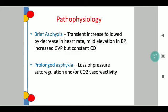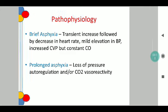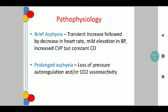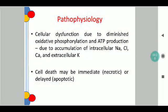Looking at the pathophysiology, we classify it into brief asphyxia and prolonged asphyxia. Brief asphyxia is characterized by a transient increase followed by a subsequent decrease in the heart rate, associated with a mild elevation in blood pressure and increased central venous pressure, but constant cardiac output is maintained. Prolonged asphyxia is because of a loss of pressure autoregulation, which may be associated with carbon dioxide vasoreactivity as well.